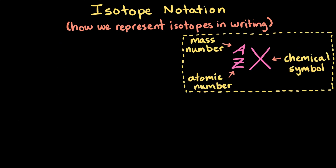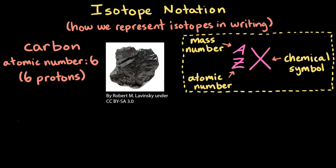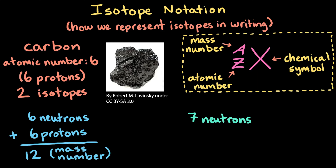Let's practice writing out the notation for different isotopes. We'll start with carbon, which has an atomic number of 6. In nature, carbon is mainly composed of two different isotopes — one has 6 neutrons and the other has 7 neutrons. Let's start with the isotope that has 6 protons and 6 neutrons. With that information, we know that the mass number must be 12, which is the sum of the protons and neutrons.